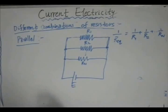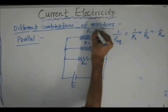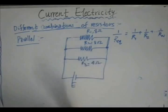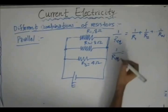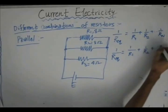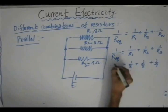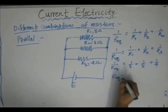To understand this, we take the same example as before: three resistors with R1 = 8 ohm, R2 = 8 ohm, and R3 = 4 ohm connected in parallel. Substituting into the parallel formula: 1/R_equivalent = 1/8 + 1/8 + 1/4. Solving this gives R_equivalent = 2 ohms.